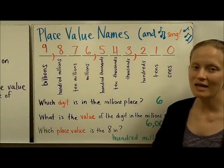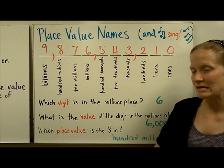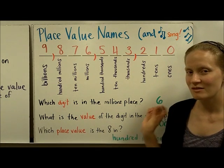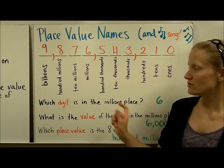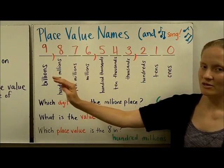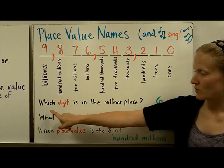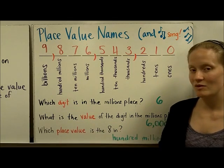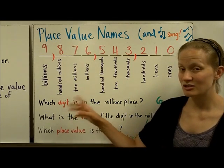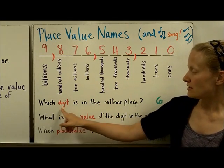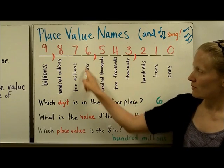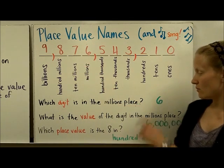So here are three different kinds of questions that you may see. They're all worded just a little bit different to tell you what kind of answer they want that uses the place value names. Which digit is in the millions place? When they ask for a digit, they just want one single number.